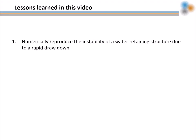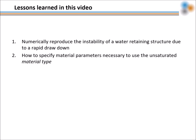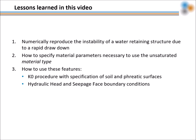Let's recap the lessons learned in this video. You learned how to numerically reproduce the instability of a water retaining geostructure due to a rapid drawdown — the rapid reduction of the reservoir or river level. You learned how to specify material parameters for the unsaturated material type, including a soil water retention curve and a hydraulic conductivity curve. You learned how to use the K-NOT procedure with specification of soil and phreatic surface, and how to deal with hydraulic head and potential seepage phase boundary conditions. I hope you enjoyed this video and thank you for your attention.